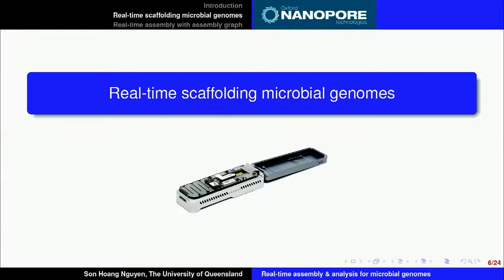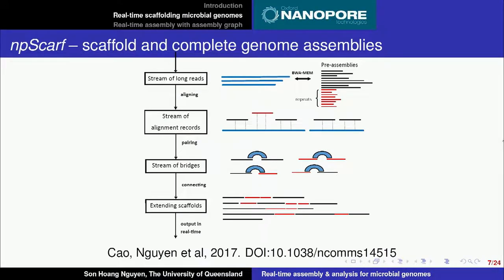At the early stage, for real-time scaffolding of microbiome, we developed NP-SCAP. The idea is quite simple: you take a stream of long reads coming in, align them with the short read assembly using BWA-MEM or now Minimap2, so that you have the alignment record. You know which pair of contigs are connected to each other, and then you can put them into a scaffold structure. When you have more long reads, you have more alignments.